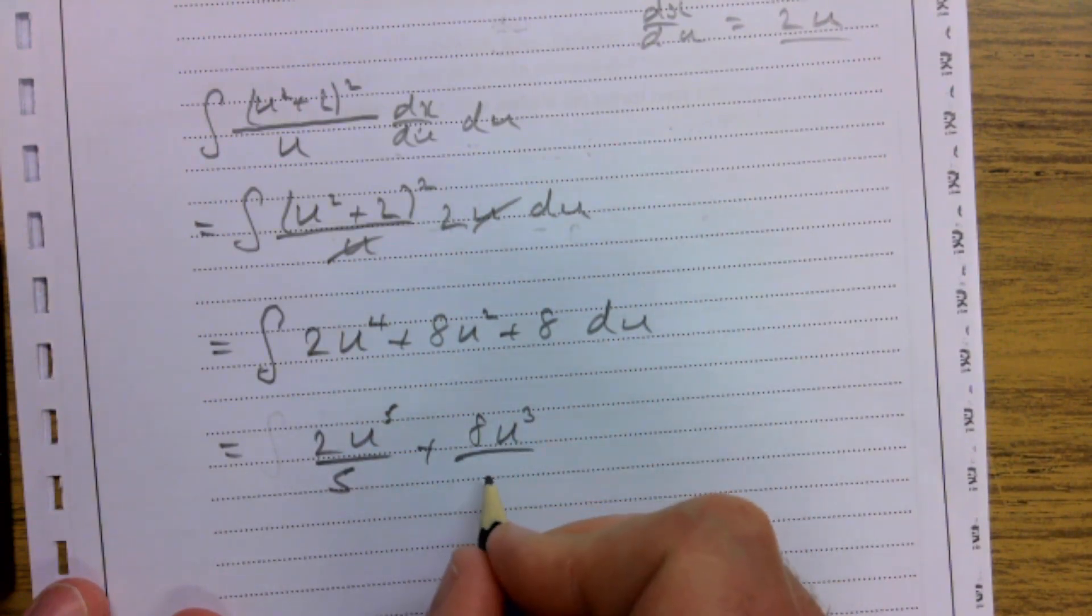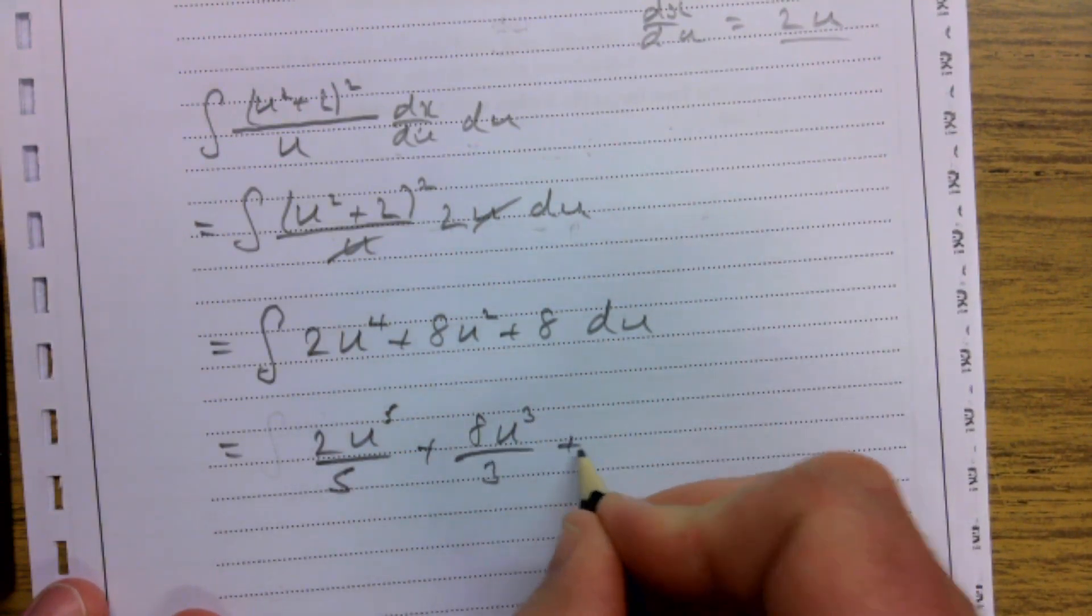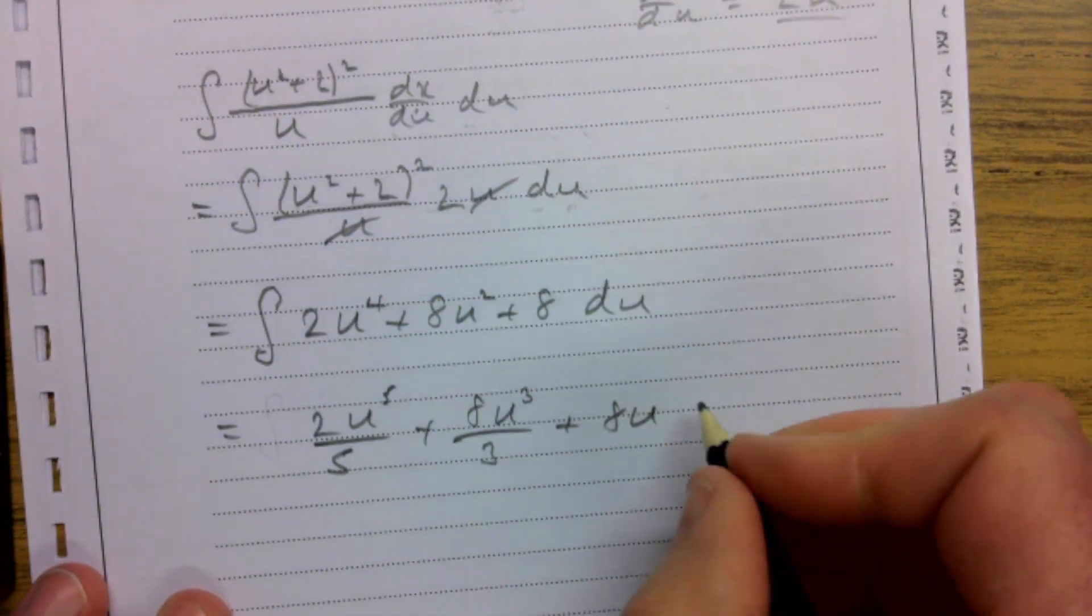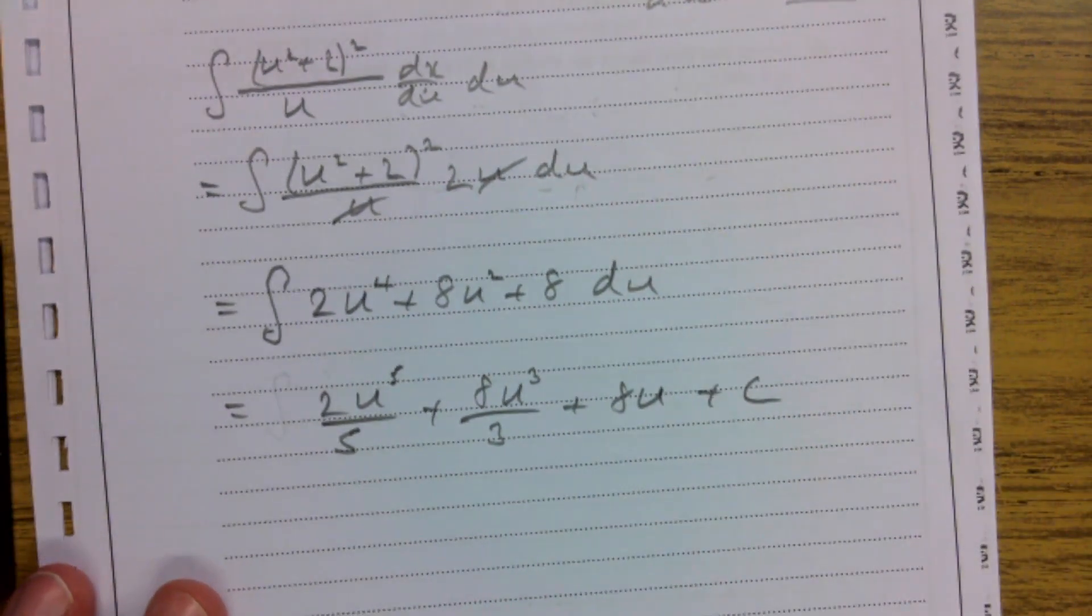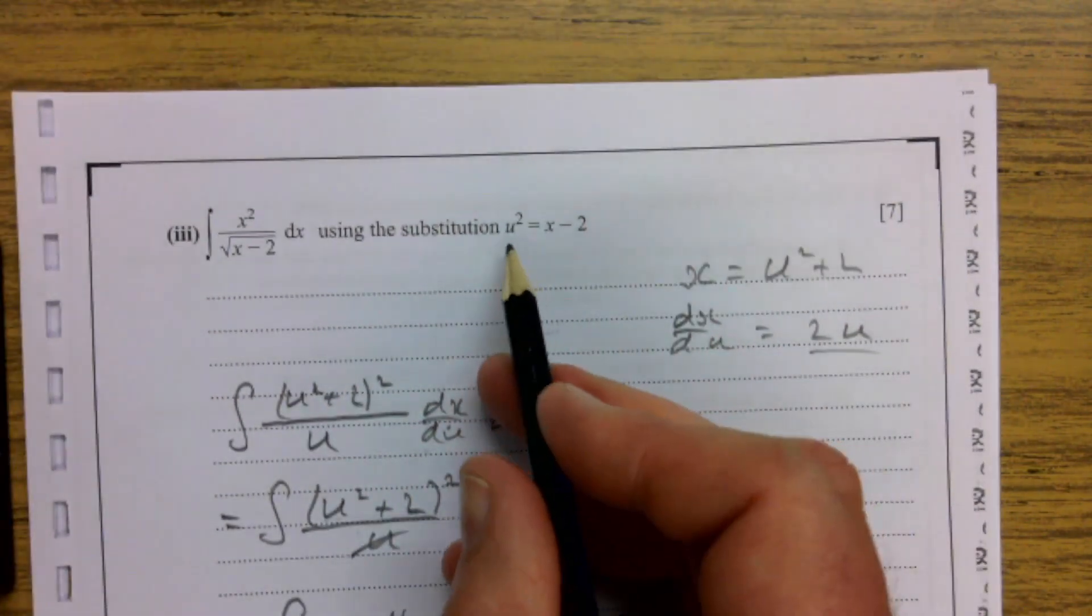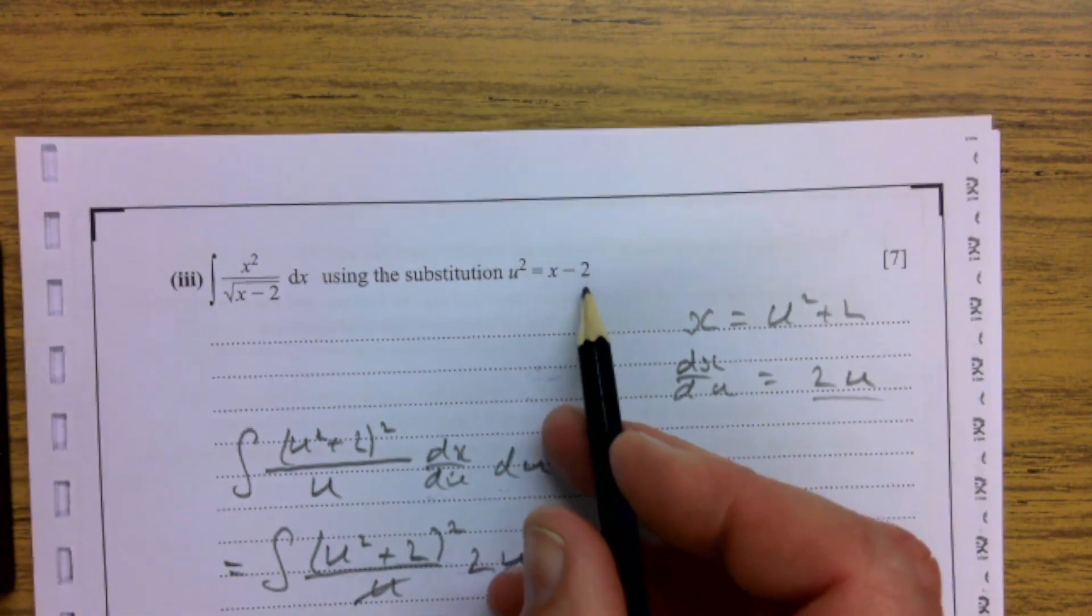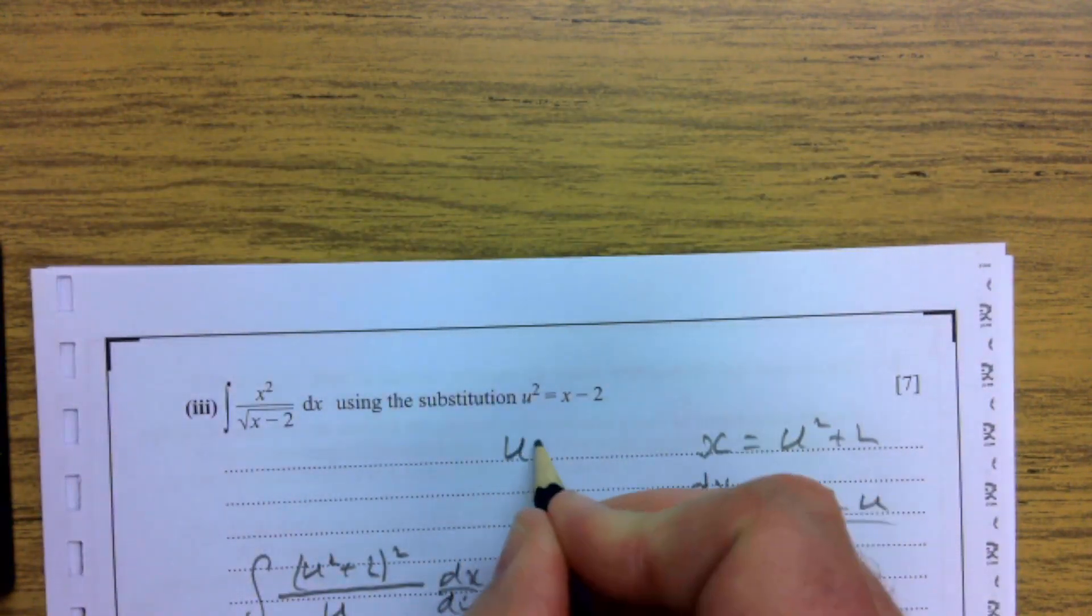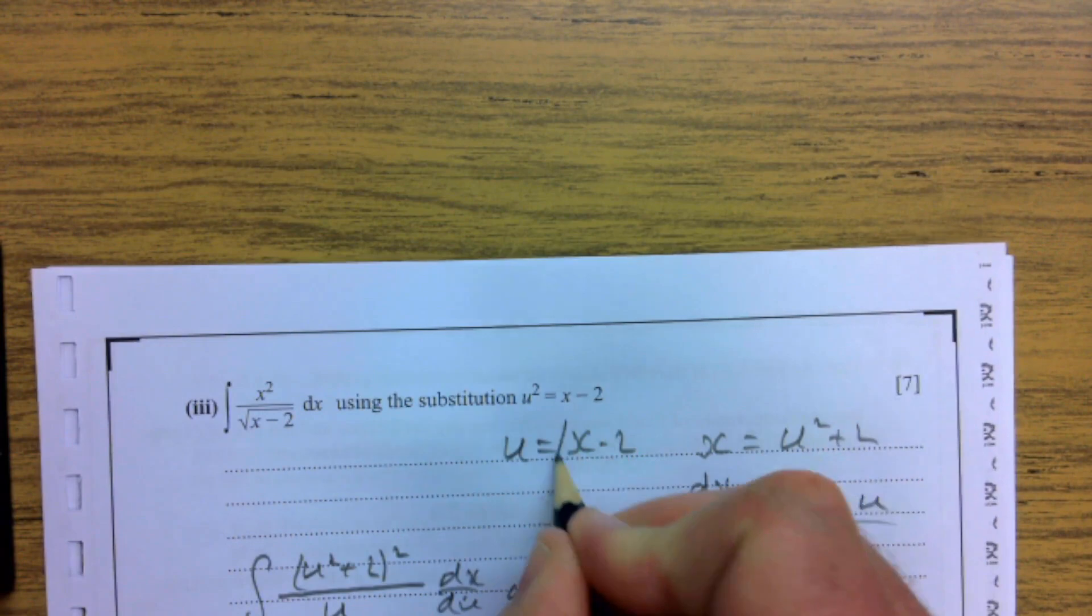And then this is kind of messy subbing this back in, but that's okay. We know that u squared is x minus 2, so we know that u is x minus 2 to the half. That's going to be our easiest way.